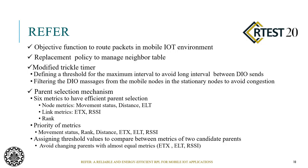The replacement policy to manage the neighbor table is LRU. We modified the trigger timer and defined a threshold value for the maximum interval to avoid long intervals between DIO transmissions. Prefair filters DIO messages from mobile nodes at stationary nodes to avoid congestion. In the parent selection mechanism, Prefair utilizes six metrics in order of preference: movement status, rank, distance between node and its candidate parent, ETX, ELT, and RSSI. Prefair has a threshold for ETX, ELT, and RSSI to avoid changing the parent when candidate parents have almost equal metrics.